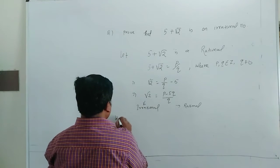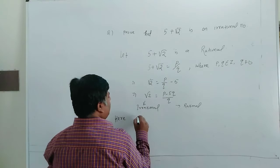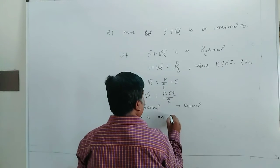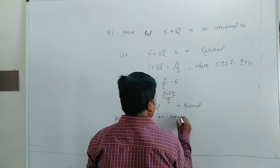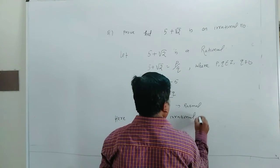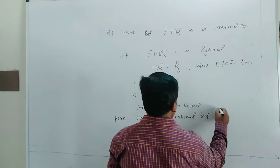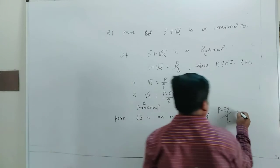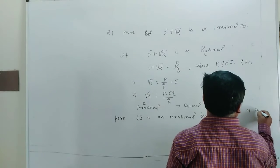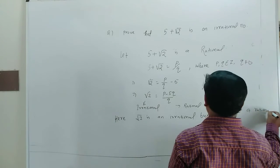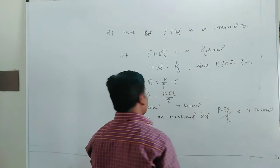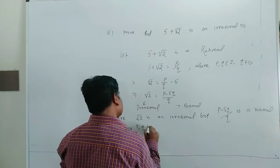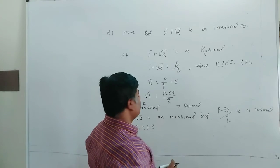Here, under root 2 is irrational, but P minus 5Q by Q is rational, since P and Q belongs to Z. Integer is rational.